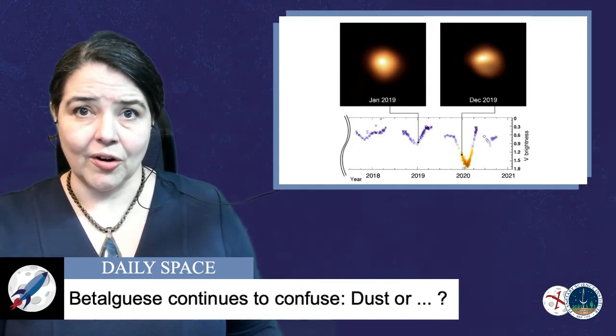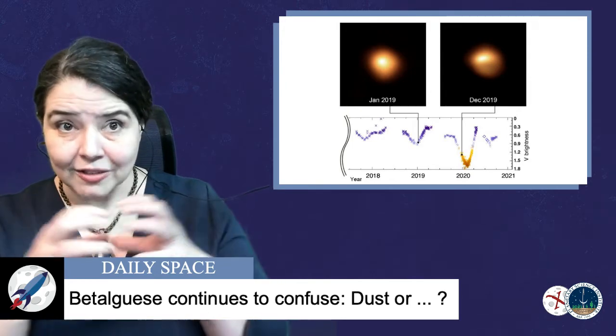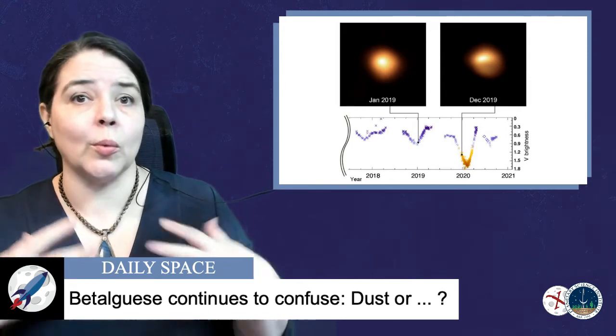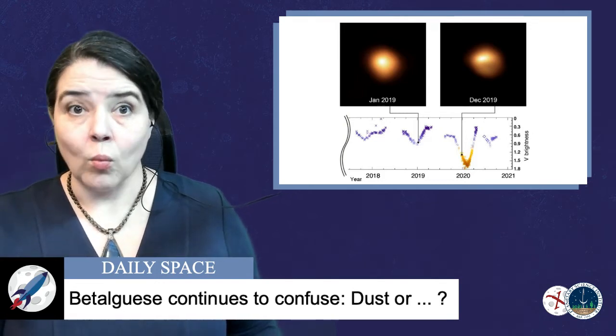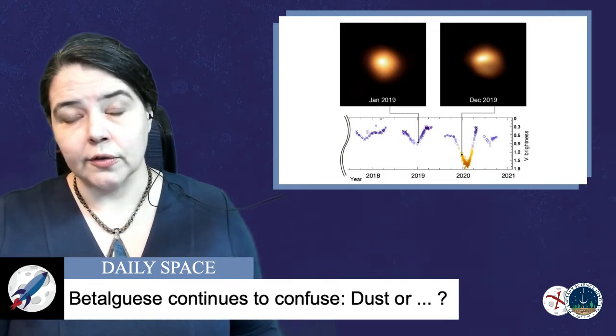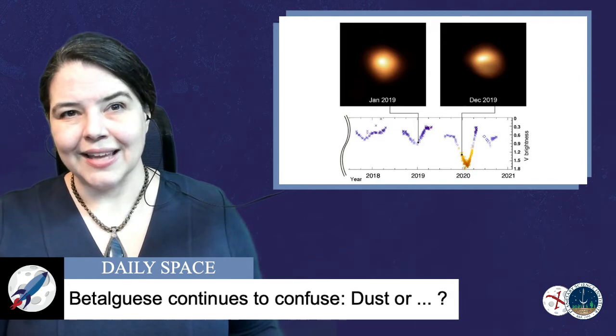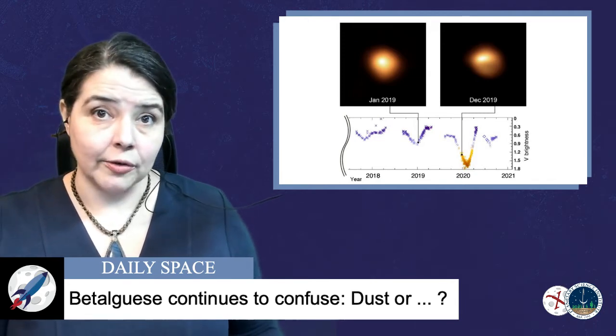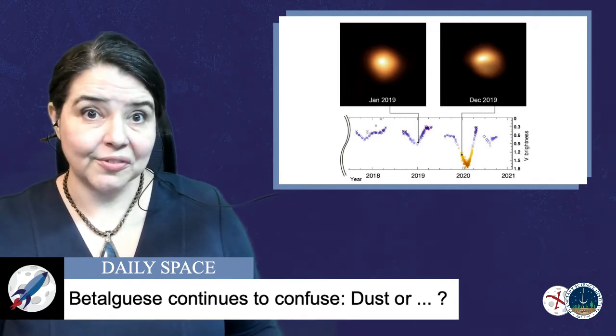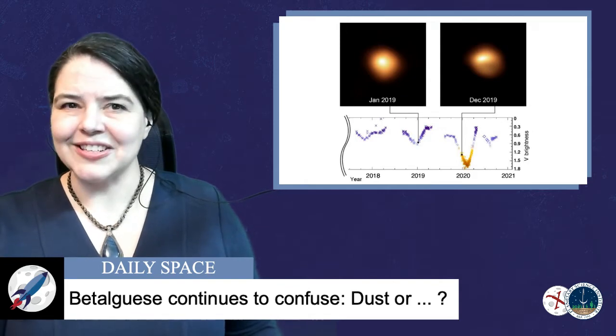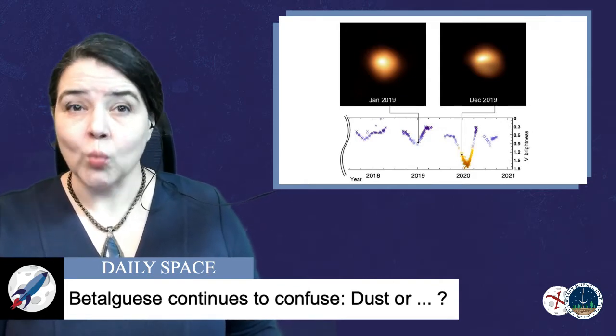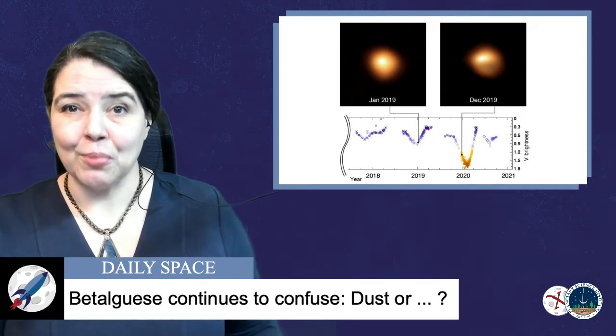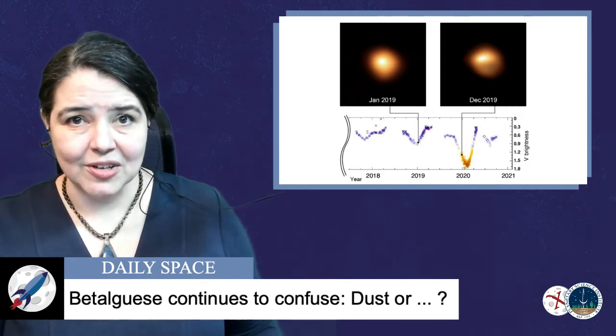This new way of looking at Betelgeuse also explains the timing of the Great Dimming. Betelgeuse is a variable star, and it is pulsing, literally pulsing in size, with multiple beats that aren't always in sync. One of those pulsations is a 430-day beat, and the other is 5.8 years. Like windshield wipers that aren't in sync, these pulsations do sometimes line up. And last January was one of those times, with both pulses working together to dim the star.